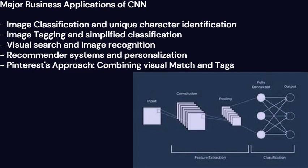Recommender Systems and Personalization. Recommender engines rely on image classification and object recognition to provide personalized recommendations to users. Amazon's You Might Also Like section is a prime example. By analyzing the user's behavior and matching the visual features of items, the recommender system suggests relevant products. For instance, if a user buys a red gown, the system may recommend red lipstick and red shoes as complementary items.